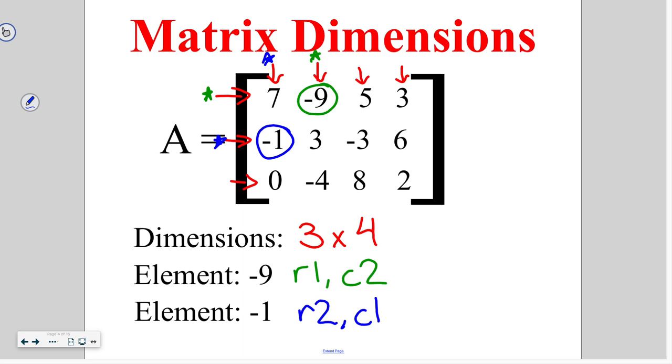Now, how does this relate back to our systems of equations that we've been looking at? What this is saying is if I actually had the equations behind this matrix, this first line would be saying 7x - 9y + 5z = 3. The second row would be saying -1x + 3y - 3z = 6, and this last row would be saying 0x - 4y + 8z = 2. So, this is going to help you in high school when you start to get into these more complex systems of equations.